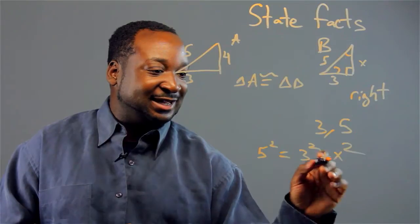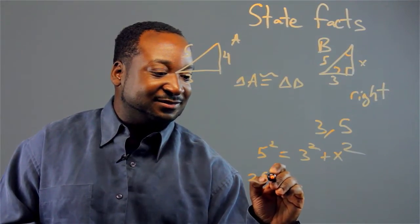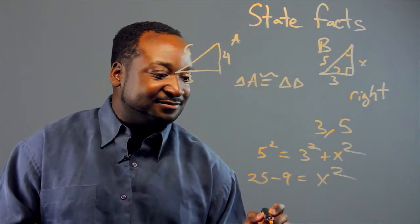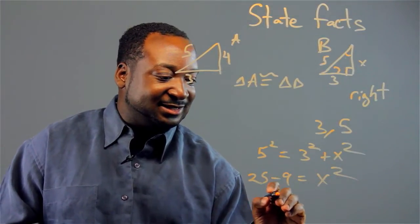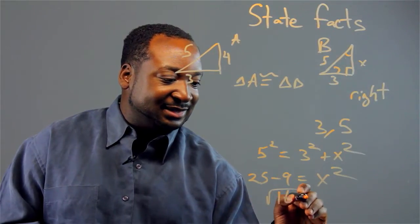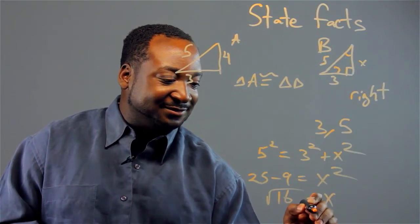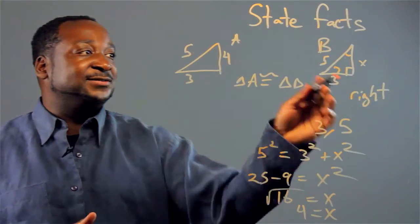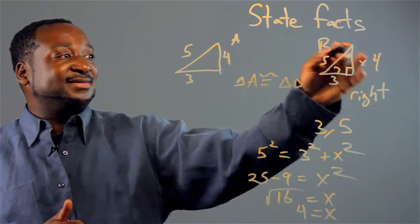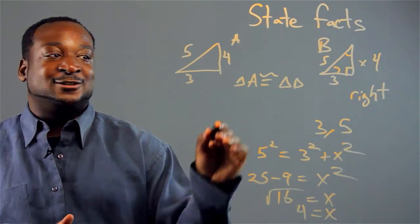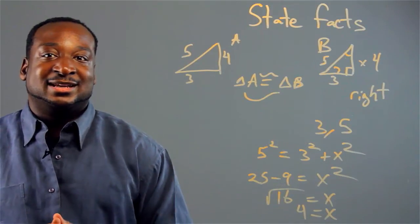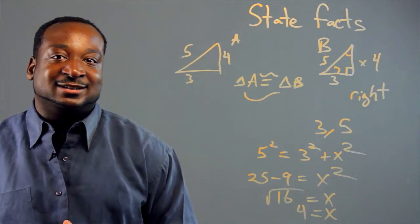So you have 25 minus 9 equals X squared. Okay, so that's 16 equals X squared. So X equals 4. So now we just proved that X equals 4. So we've proved that triangle A is congruent to triangle B. And that's one way of how to solve proofs.